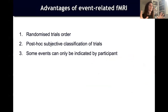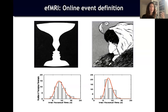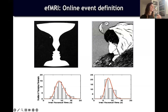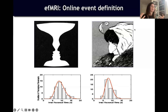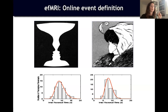Some events can only be indicated by the participant. For example, with bistable images — like the vase/faces illusion or the young woman/old lady — your perception switches from one representation to another. If you're interested in what happens in the brain when participants switch representations, you need to model exactly the moment they press a button to indicate the switch. That is something you simply cannot block by definition.